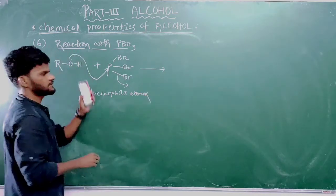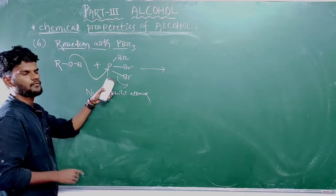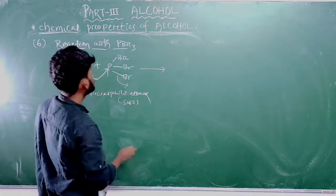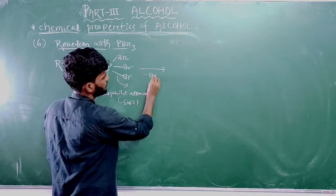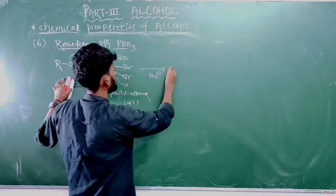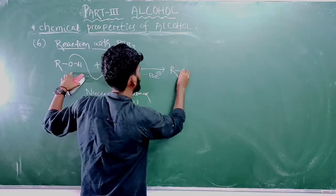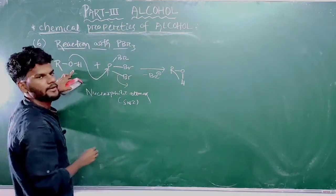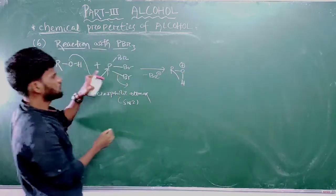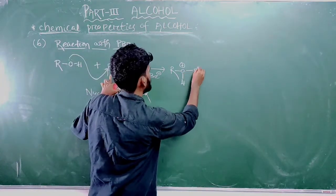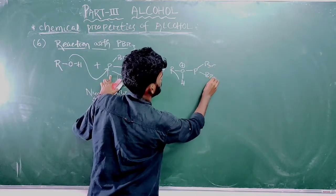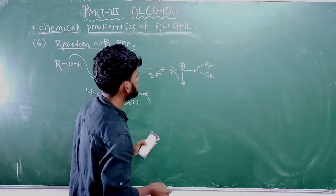This is an SN2-type reaction — in a single step, the nucleophile attacks the electrophile and the leaving group departs. So Br⁻ is released as a leaving group. In the next step, an intermediate forms: R-O⁺ — as oxygen donates its electron pair, there is a positive charge over oxygen. Oxygen is now attached to phosphorus, which still has 2 bromine atoms.